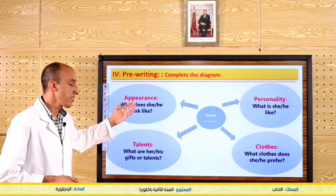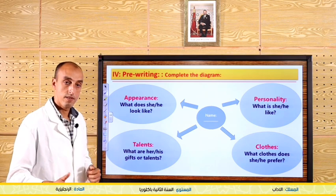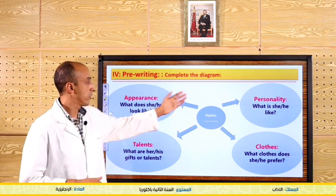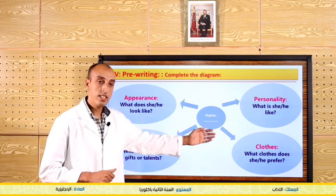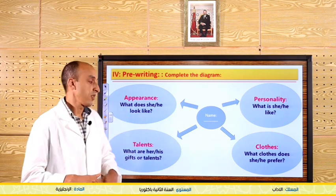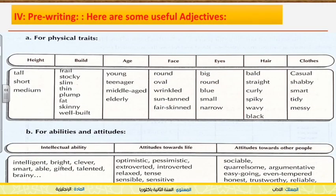To repeat: you have to focus on appearance, then personality, after that talent, then clothes. We can use the following table so as to enrich our linguistic repertoire with some useful adjectives. For physical traits and appearance, we can speak about height, build, age, face, eyes, hair, and clothes.